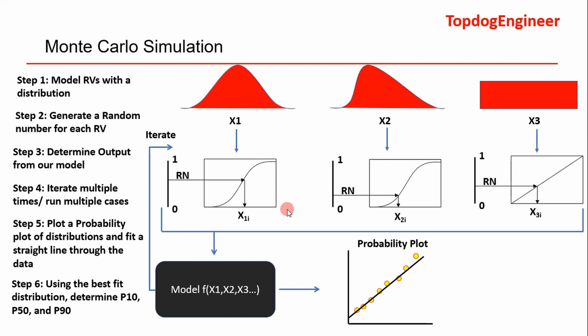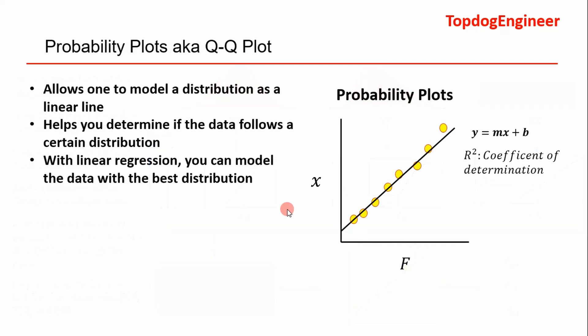We'll go into that in the next slide. But after you've gotten your outputs and you've modeled it as a mathematical distribution, you can go determine your P90, P50, P10, which we always use in oil and gas.